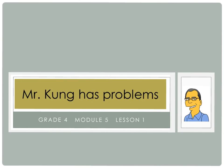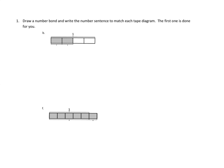So let's take a look at the first of our problems. Problem number 1 asks us to draw a number bond and to write the number sentence to match each tape diagram. The first one is done for you. Let's take a look at letter B. Letter B has 1 — this is 1 unit long — and it looks like it's divided into 4 pieces.